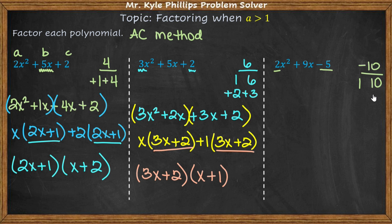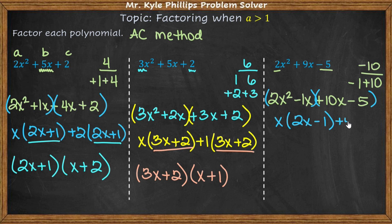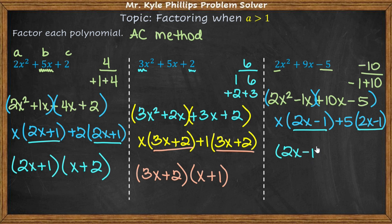Next example: 2 times negative 5 gives me negative 10. I need factors of 10 that combine to get positive 9. One of them has to be negative because they multiply to give negative 10, but I want to add them to get positive 9. So negative 1 plus 10 gives me positive 9. I write: 2x² minus 1x plus 10x minus 5, then factor by grouping. Pulling out an x gives 2x minus 1; pulling out a 5 also gives 2x minus 1. Then I factor out the common binomial.